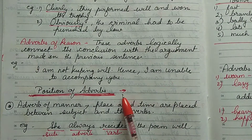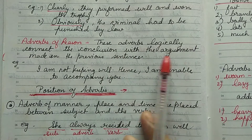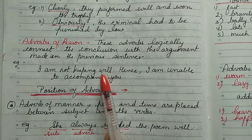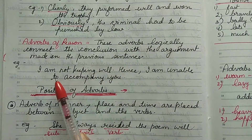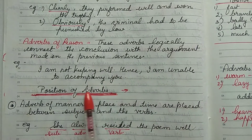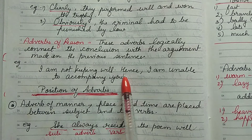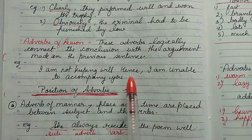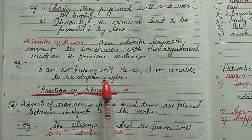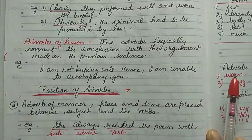Then adverb of reason: when we apply a reason for a statement, these adverbs logically connect a conclusion with the argument made in the previous sentence. Example: 'I am not keeping well. Hence, I am unable to accompany you.' Here 'hence' is the adverb of reason — it gives the reason why the person is not coming.